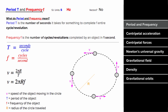What does period and frequency mean? The period is the number of seconds it takes for a process to complete an entire cycle, circle, or revolution. So if there's some repeating process, the time it takes that process to reset is the period, and it's measured in seconds.